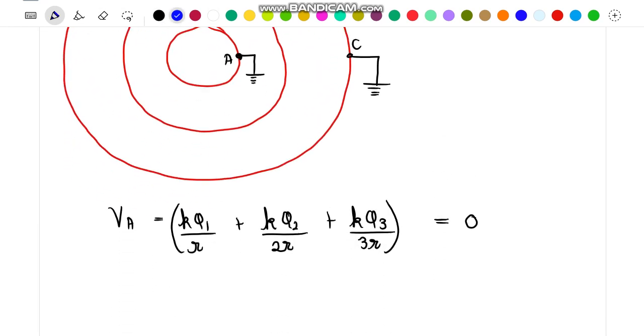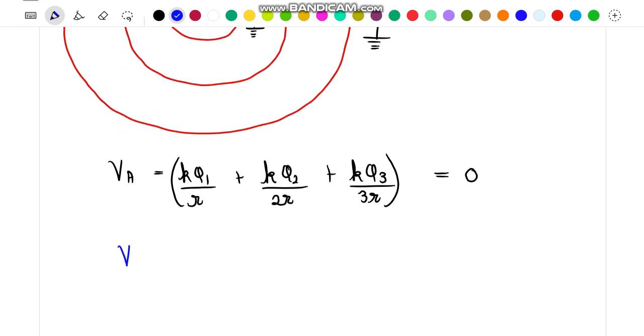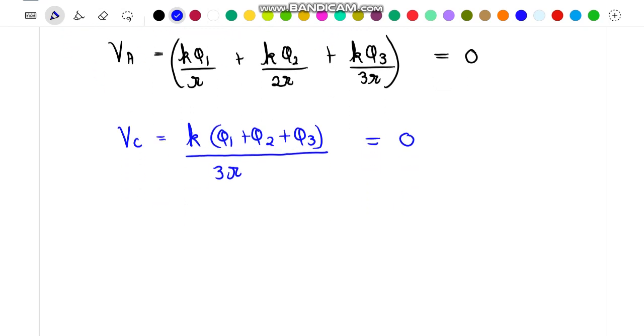Similarly for point C, we are making use of the general expressions for the potential at point C due to the three spherical shells, which can be written to be equal to K times the sum of all the charges divided by 3R. Point C is connected to earth, so potential of point C should be taken as zero.